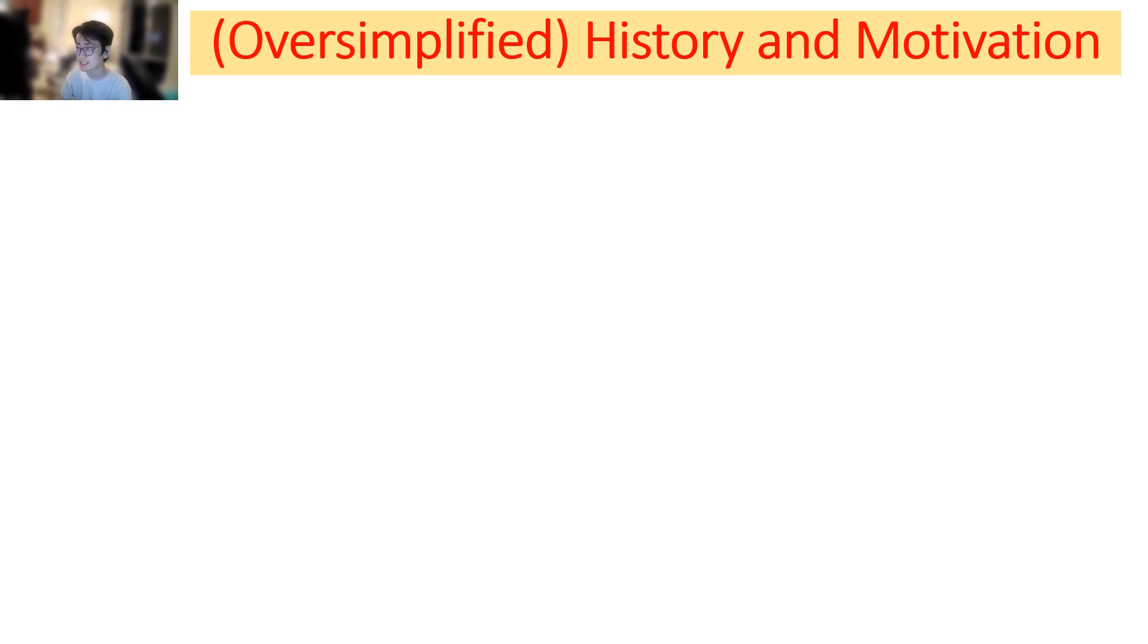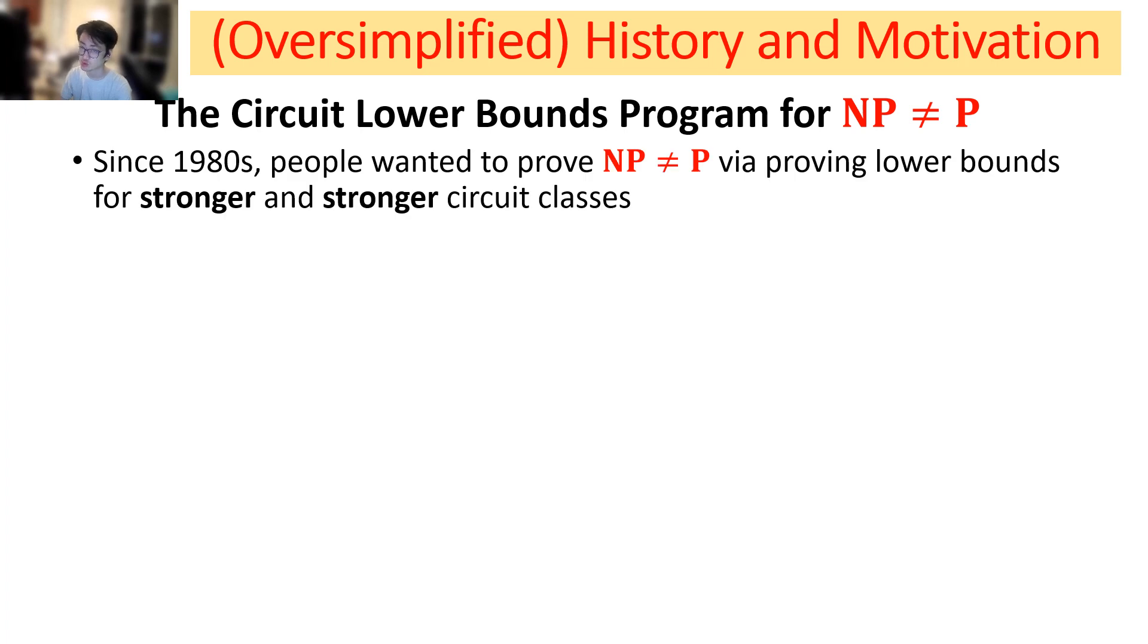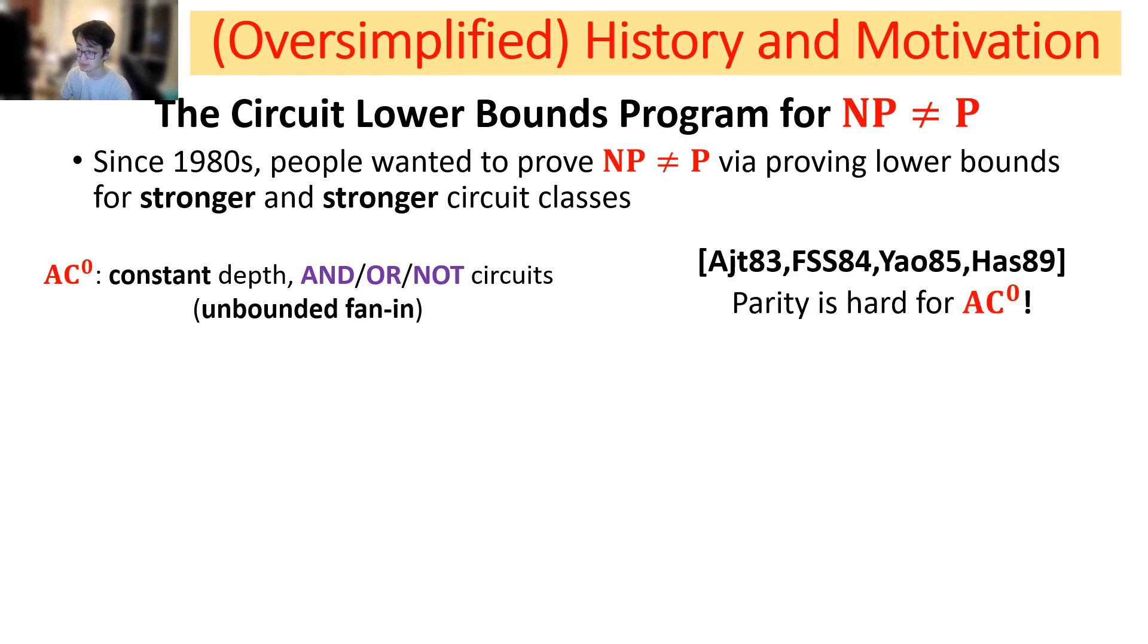Here's the oversimplified history and motivation for proving circuit lower bounds. Since the 1980s, people wanted to prove NP ≠ P by proving lower bounds for stronger and stronger circuit classes. The ultimate goal is to prove NP is not in P/poly, where P/poly denotes all polynomial-sized circuits. First, people look at a much weaker circuit class called AC^0, which is constant depth AND/OR/NOT circuits where the gates have unbounded fan-in.